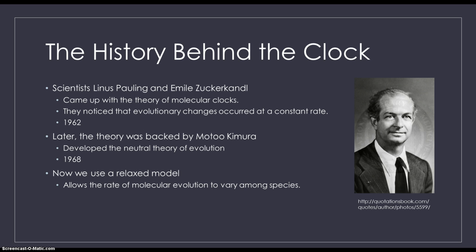So here's some history behind the clock. Scientist Linus Pauling and Emile Zuckerkandl saw that evolutionary changes occurred at a constant rate in 1962. Now this theory was just based on empirical observations, but then was later backed by another scientist, Motoo Kimura, who developed the neutral theory of evolution in 1968. However, he believed that the rate was constant throughout time and across different species. This idea was too strict because molecular evolution rates are different in different organisms, slightly.